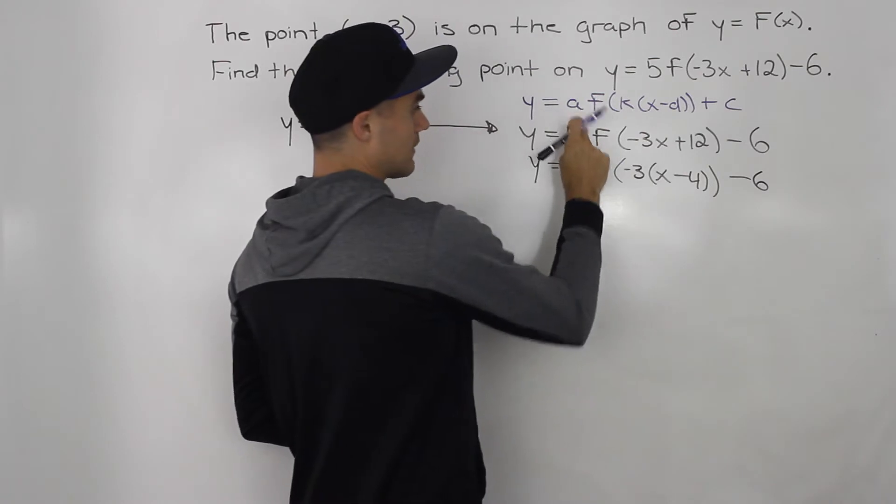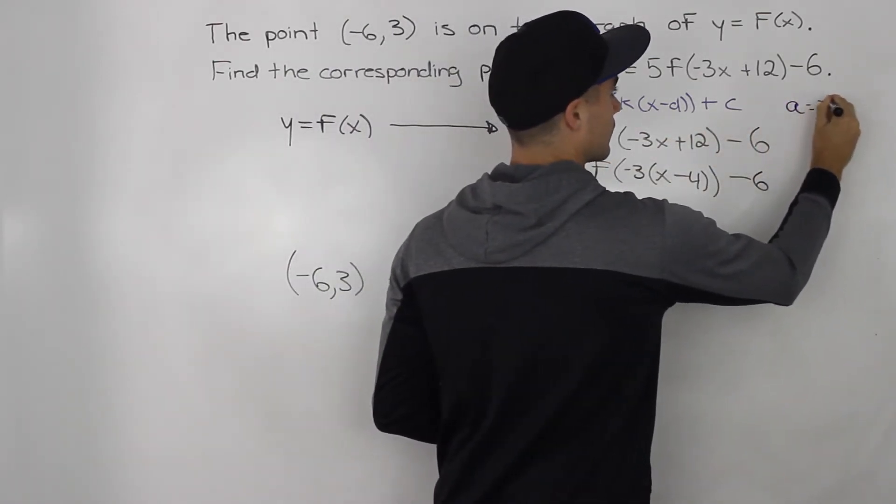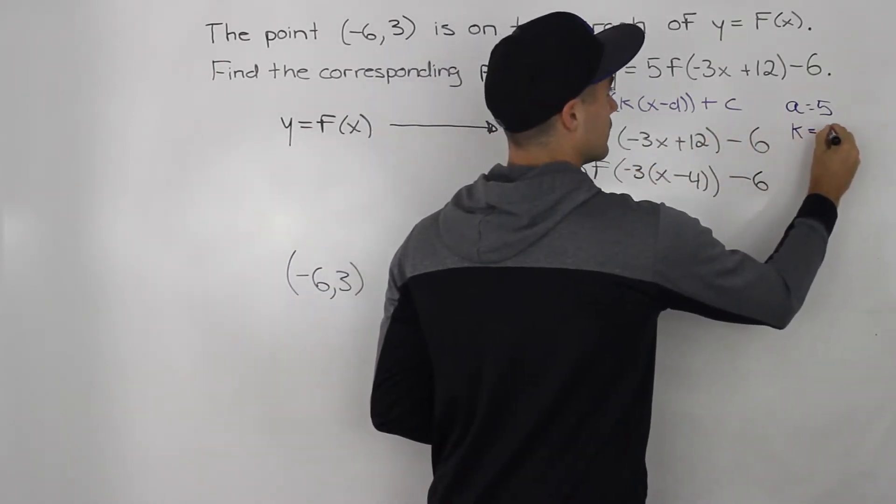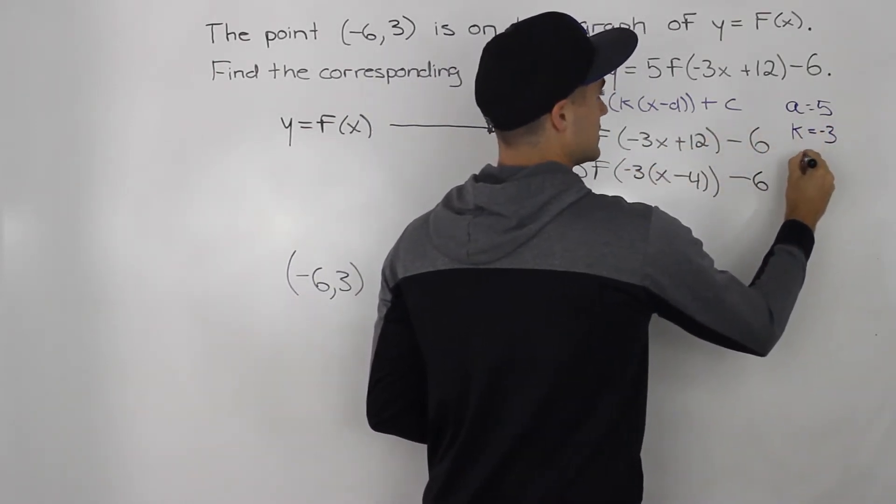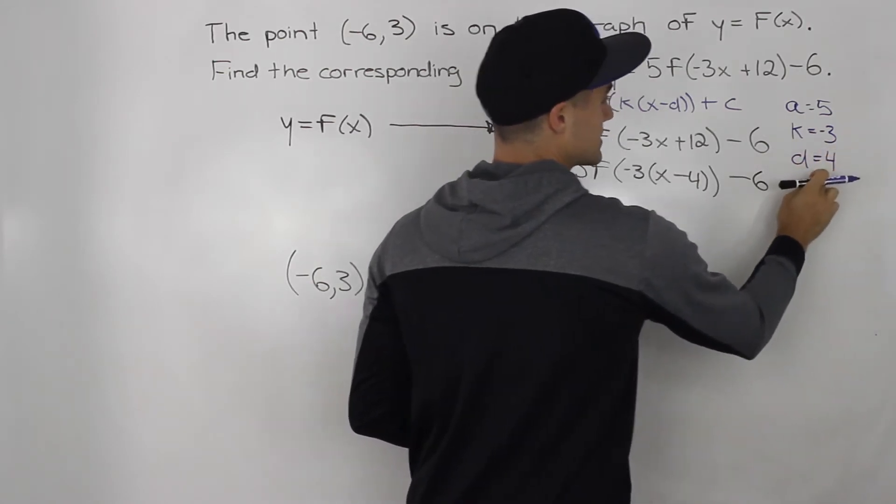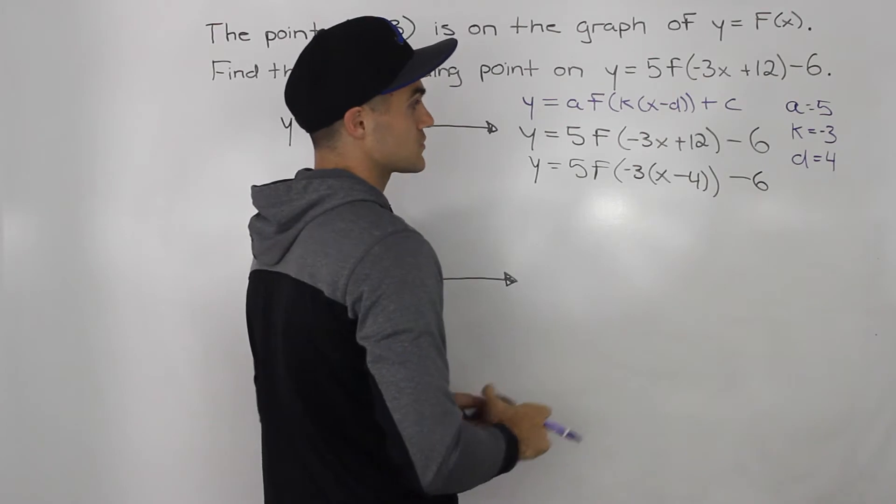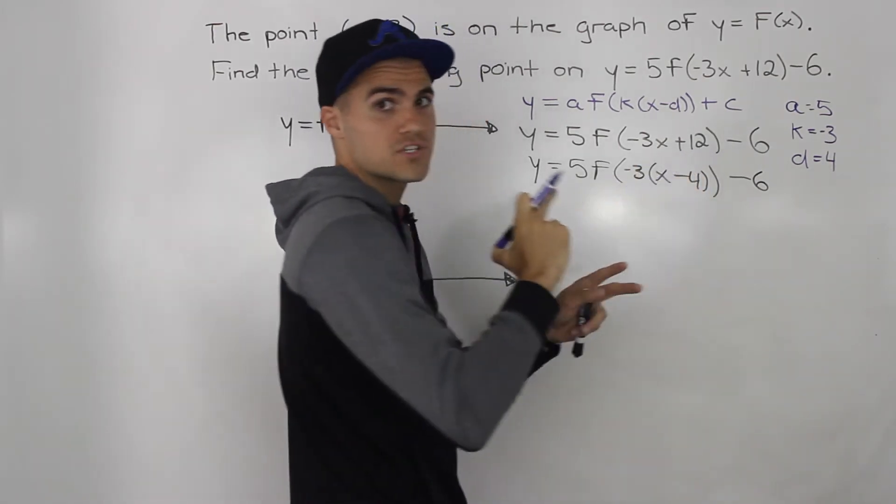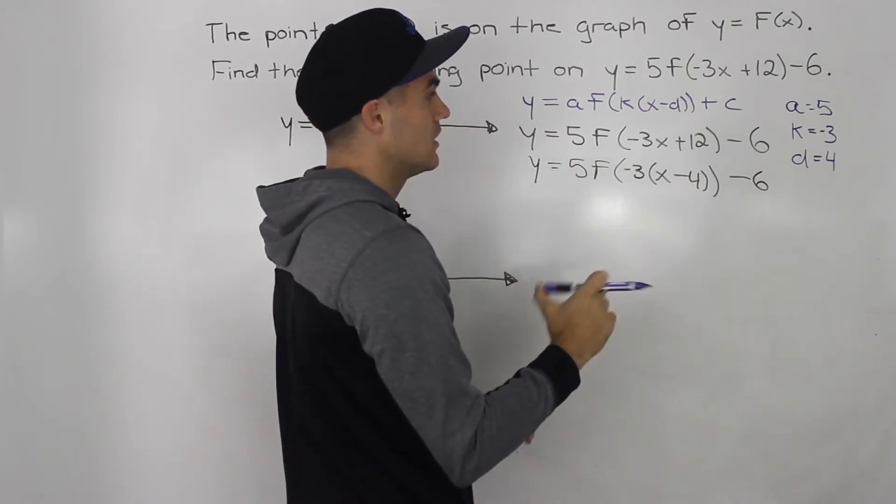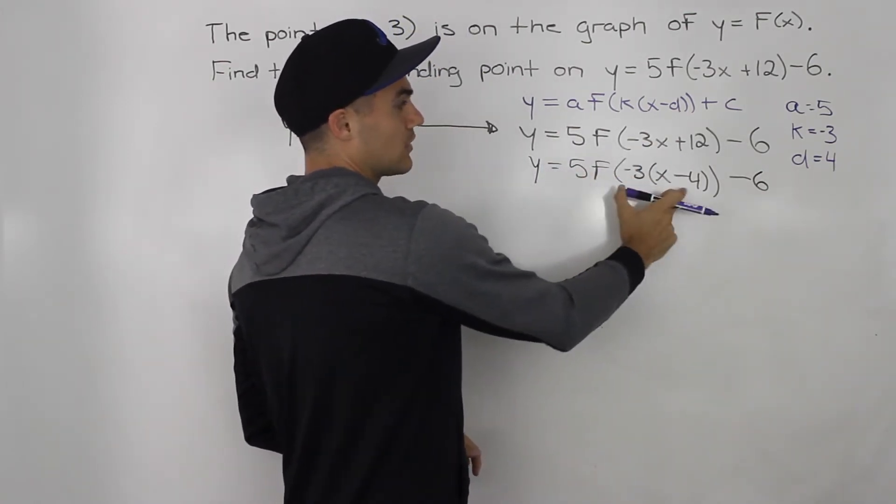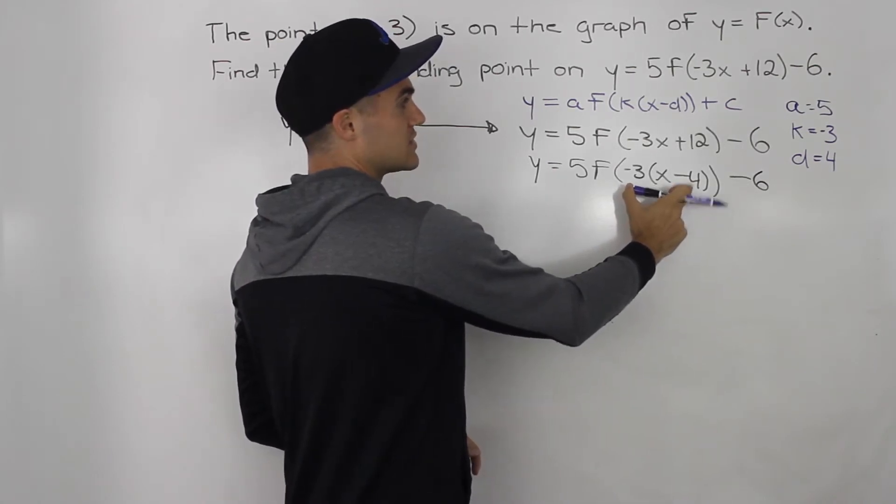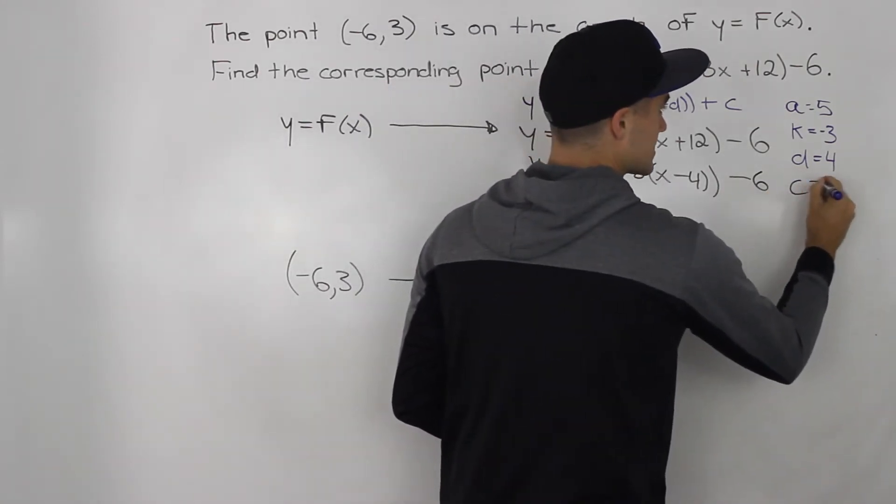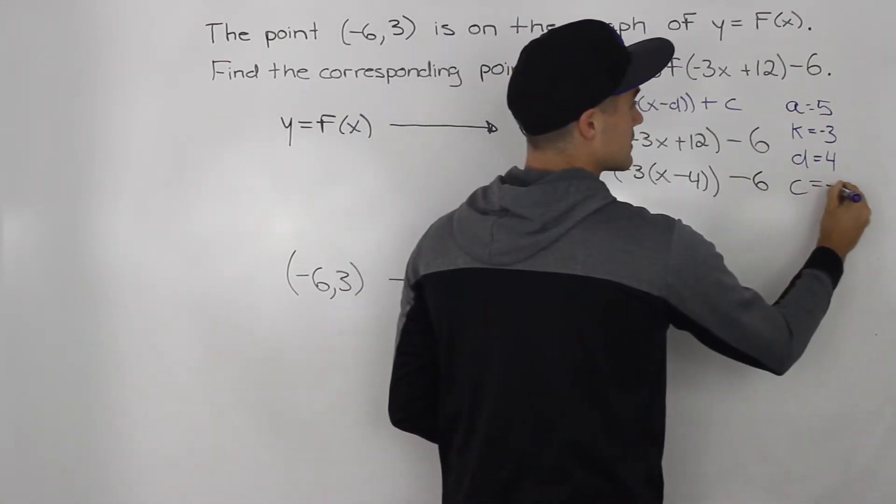So let's figure out what those are here on the side. So we can tell that the a value is five, k value is negative three, the d value is four. And this is the tricky part of the question. A lot of times students will say the d value is negative 12 here. Remember, you always switch the signs for the d value. But it's not because after you factor out the negative three, you're left with a minus four here. So your d value is going to be positive four. And then the c value is going to be this negative six.